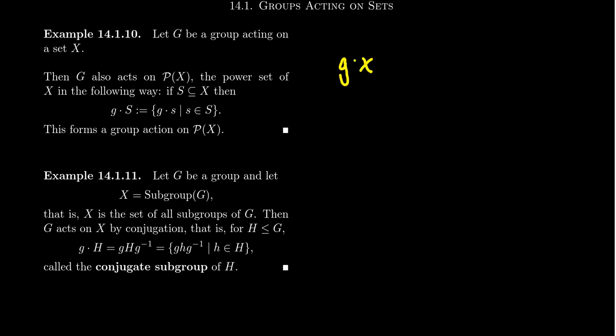G times X on little set X, this is equal to some element Y. If we take any subset of X, because these are the typical elements of the power set, then we can define the action of G on the set. And we're just going to do this element-wise.